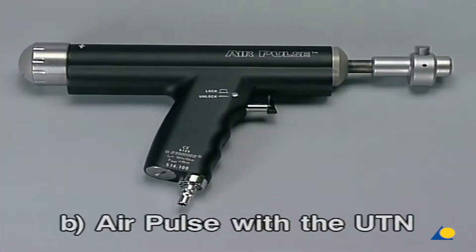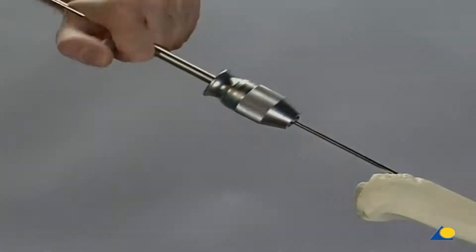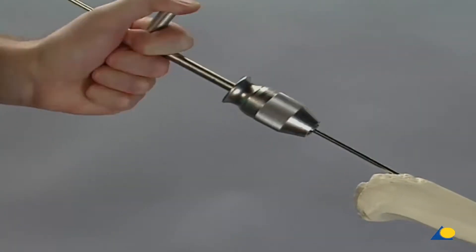Part B: The air pulse used with the UTN. Again, the medullary canal is opened as usual.